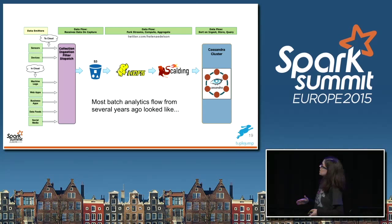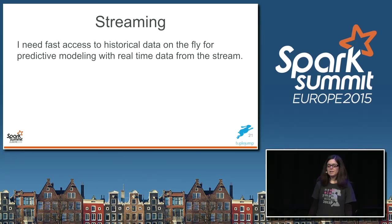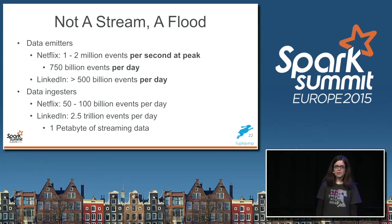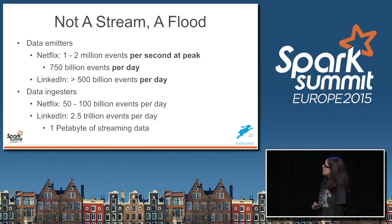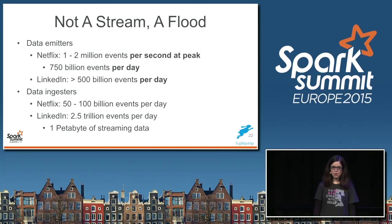I really do like Scalding — it's Scala over Cascading and works incredibly well with Hadoop. Then enter streaming with our streaming analytics requirements: fast access to historical data on the fly for predictive modeling with real-time data from the stream. This is actually really hard. When you're dealing with infrastructure and 24/7 uptime, it's a flood, not just a stream. Looking at companies like Netflix doing 50 to 100 billion events per day, and LinkedIn doing 2.5 trillion events per day — a petabyte of streaming data — that's a lot of things that can potentially go wrong.